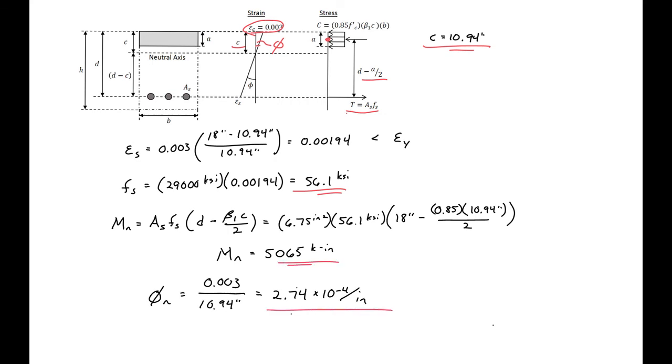So these would be our final answers here. This is how you can find the nominal moment and nominal curvature for a section if you find out that your steel doesn't yield.